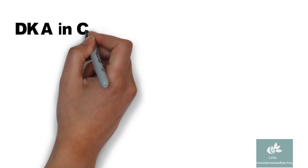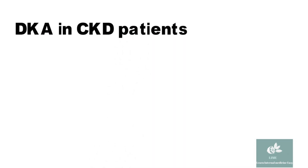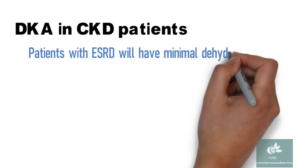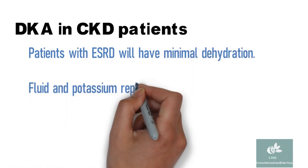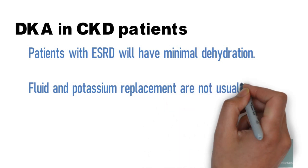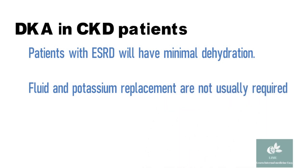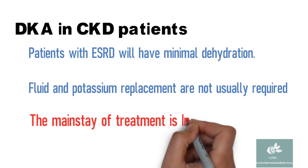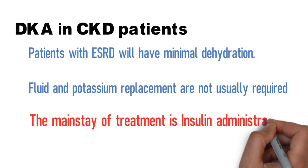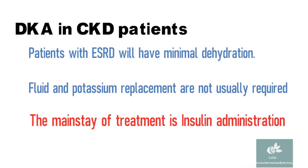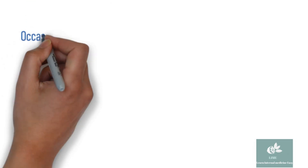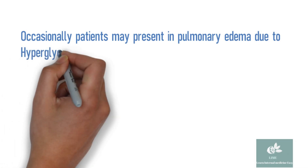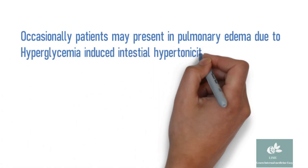DKA in CKD patients: patients with end-stage renal disease will have minimal dehydration, and fluid and potassium replacements are not usually required. The mainstay of treatment is insulin administration. Occasionally, patient may present in pulmonary edema due to hyperglycemic interstitial hypertonicity, and treatment in this case is again insulin.